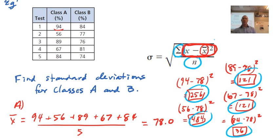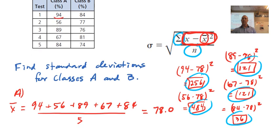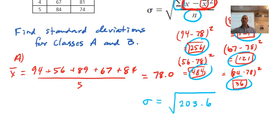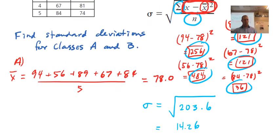203.6. Anybody else get that? A couple nods. So where are we at then? So right now we've got our sigma equals the square root of 203.6. And then we take the square root of that. What did we get for an answer here? 14.26. Is that agreed upon?